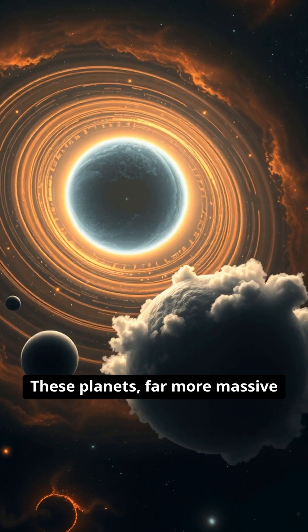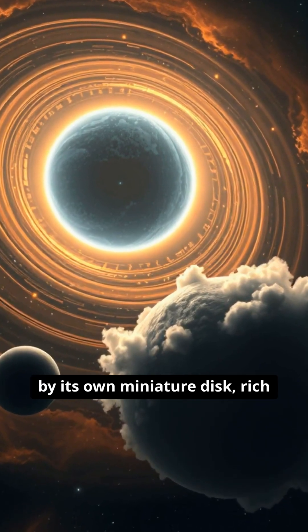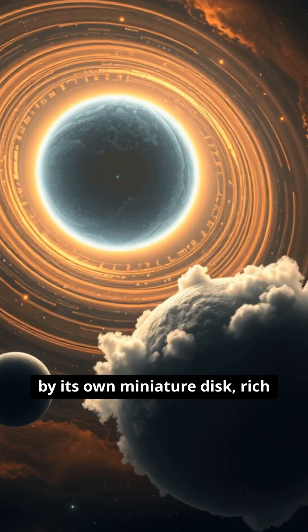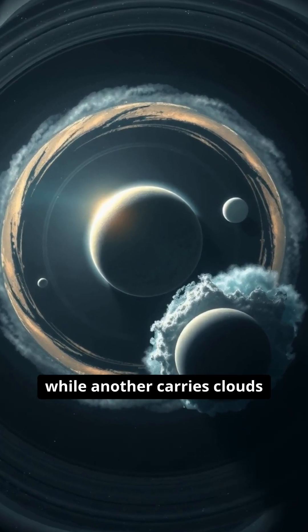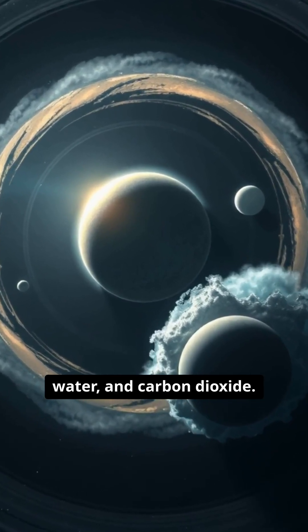These planets, far more massive than Jupiter, each tell a different story. One is encircled by its own miniature disk, rich in water and carbon monoxide, while another carries clouds of silicate and traces of methane, water, and carbon dioxide.